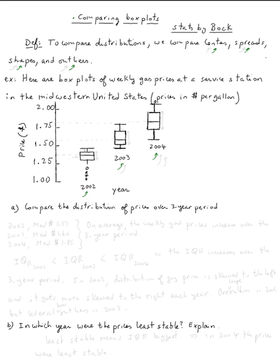Compare the distribution of prices over a three-year period. First we start with the centers. In other words, we need to compare the median. The median for 2002 will be about 1.35 or 1.37. So 2002 median is about 1.37 dollars.